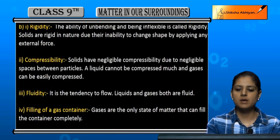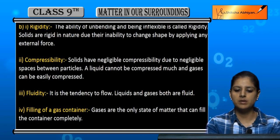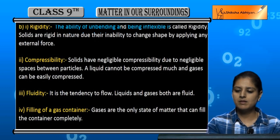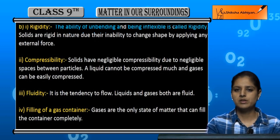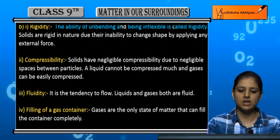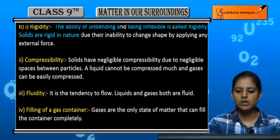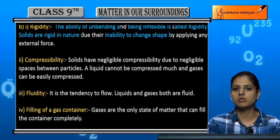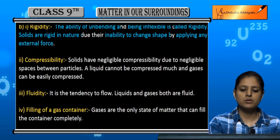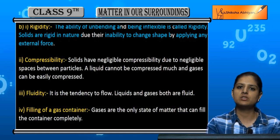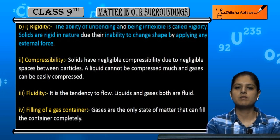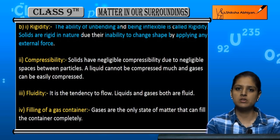Now the second part of the question — we have to comment on these terms. First, rigidity: the ability of being unbending and inflexible is called rigidity. If something is not flexible and does not bend, it is rigid. Solids are very rigid because their shape is fixed and cannot change even if we apply external force.